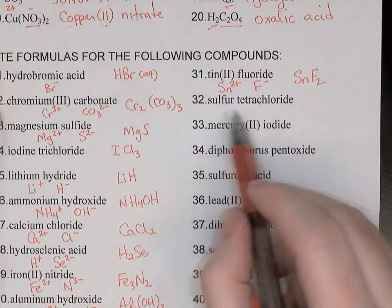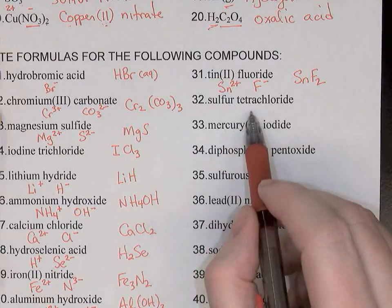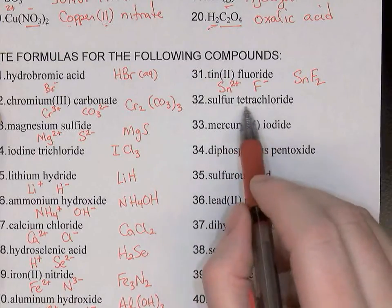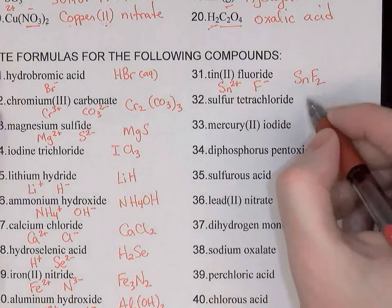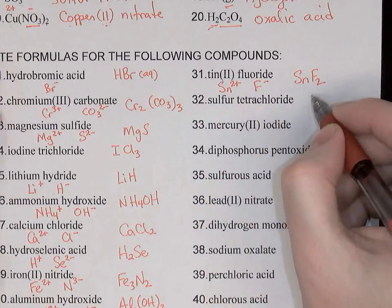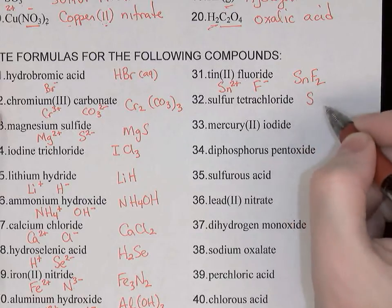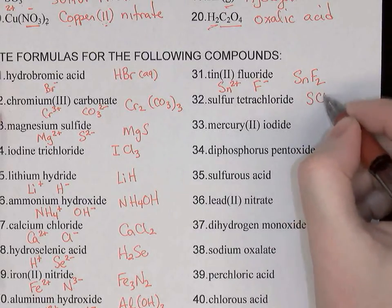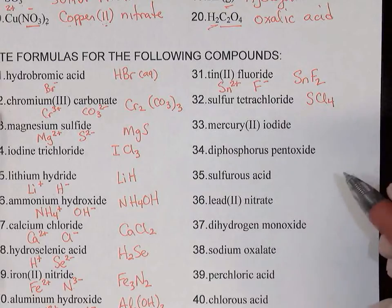Sulfur tetrachloride: this must be a covalent compound — two nonmetals, and I also see prefixes in the name, so I'll get the formula directly from the name. Sulfur: one sulfur. Tetrachloride: four chlorine atoms. So SCl4.